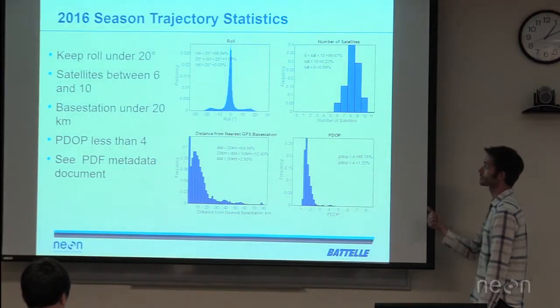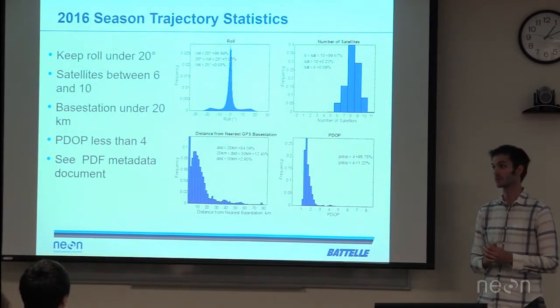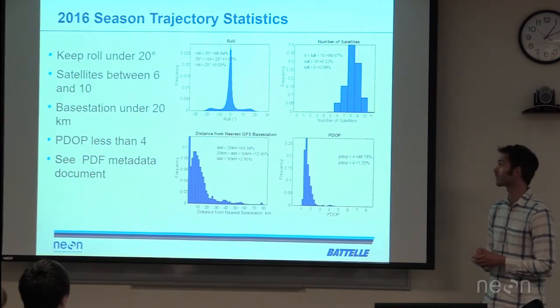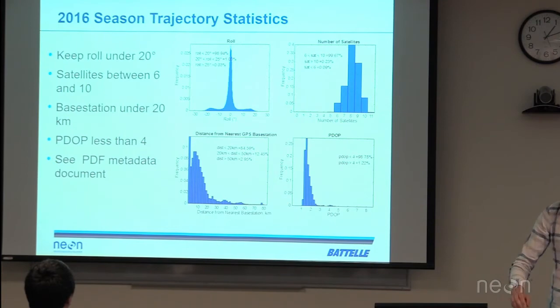We worked up statistics for all our trajectories from the 2016 flights and will likely do the same for 2017 flights, to get an impression of quality. Generally we keep roll below 20 degrees to maintain satellite lock — and it's always between 20 and negative 20. We generally had above 6 satellites, more like 8 or 9. Our PDOP was generally below 4, which is quite good. The distance to the nearest base station is below 20 kilometers for most of the time, with exceptions during transits between the site and the local airport.